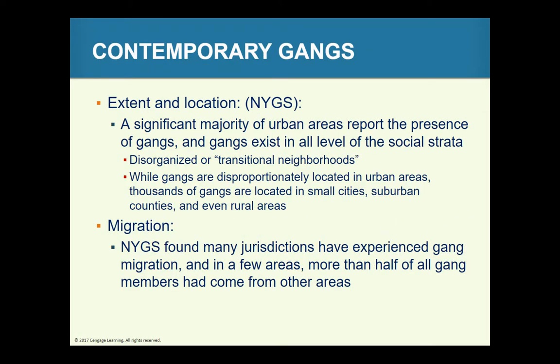In contemporary gangs, at all levels of the social strata from rural to metropolitan, there are more than 30,000 gangs with almost 850,000 members. Gang involvement is usually an urban phenomenon, although there are significant numbers in smaller towns and suburban areas, particularly in large urban transitional neighborhoods. With migration, many jurisdictions have experienced gang migration, and more than half of all gang members have come in from other areas.